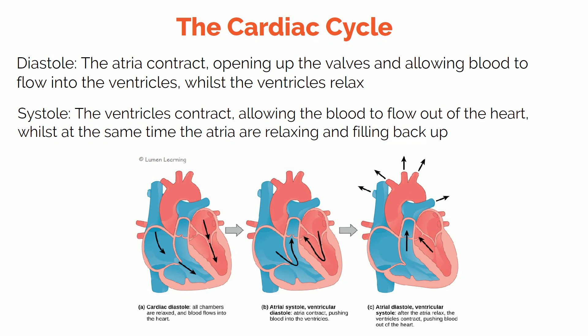So in summary, your atria contract while the ventricles relax — and this is a diastole. And then the reverse happens: the ventricles contract and the atria relax, giving rise to a systole.